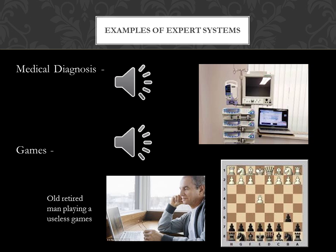Expert systems can also be in games, such as strategy games like chess, which involves a player playing against a computer. The knowledge base would be the strategies and the moves, and the player's moves would be the question or query, and the output or advice would be the computer's expert moves.